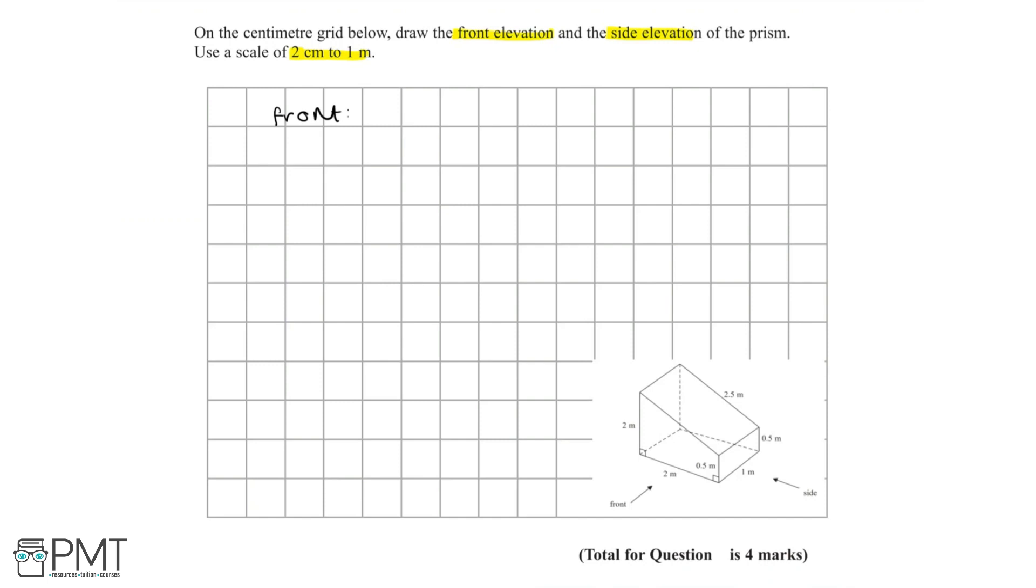We have a height of 2m. Using the scale, if 2cm is to 1m, then 4cm will be equal to 2m. So let's draw a 4cm line. Next, we have 2m going horizontally, so this will be another 4cm on our diagram.